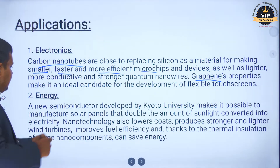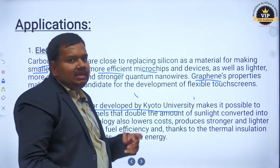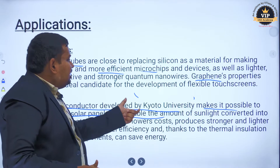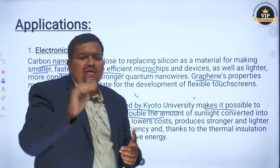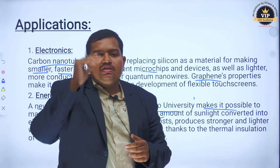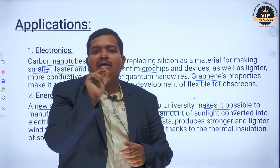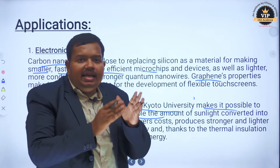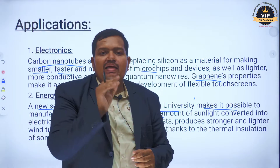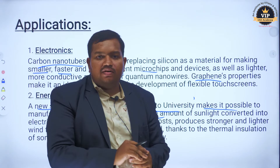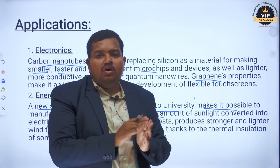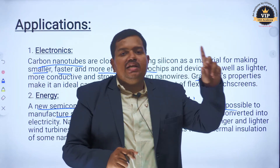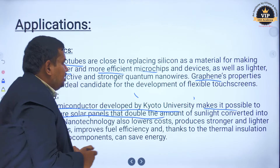With respect to energy, a new semiconductor developed by Kyoto University in Japan makes it possible to manufacture solar panels that double the amount of sunlight converted into electricity. When we use nanotechnology with solar panels, we can convert radiation and double the amount of energy produced. That is the second application.